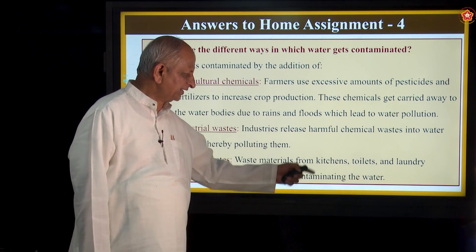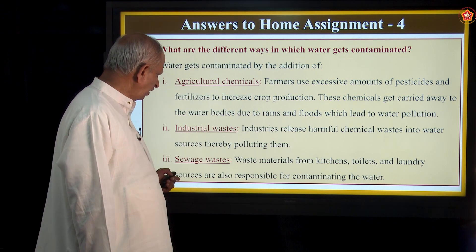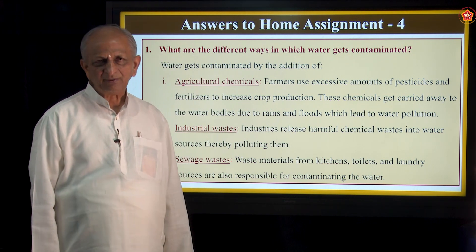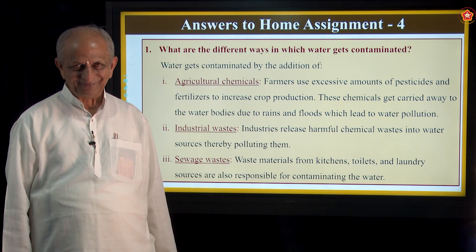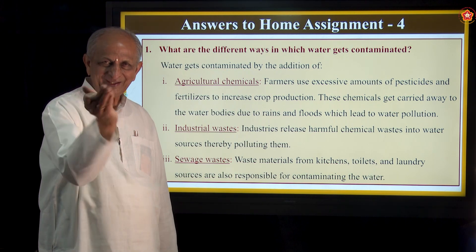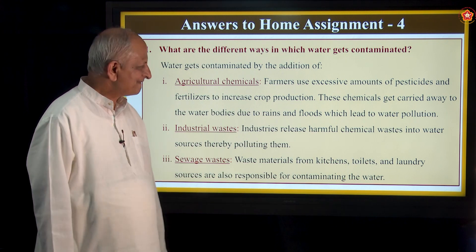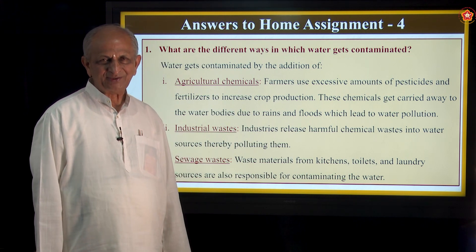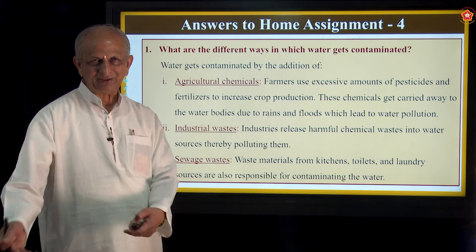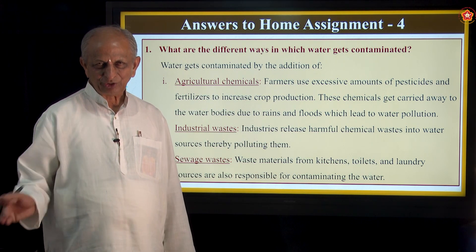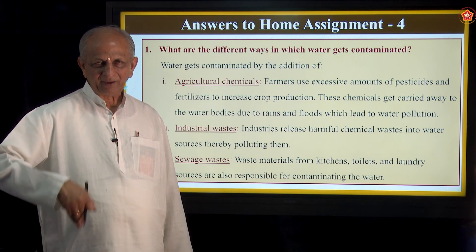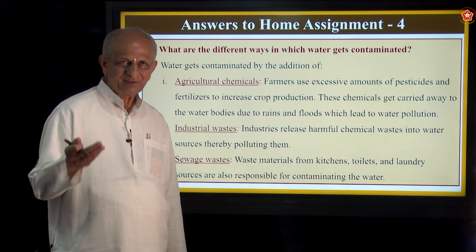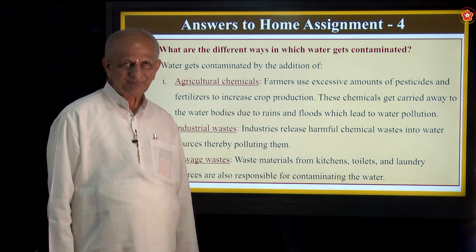Waste materials from kitchens, toilets, and laundry are what is called sewage waste, and that also contaminates water. In many houses, unfortunately, sewage water will be in front of the house. It should actually be hidden in a proper closed canal. But in many houses, especially in villages, people do not bother about that.